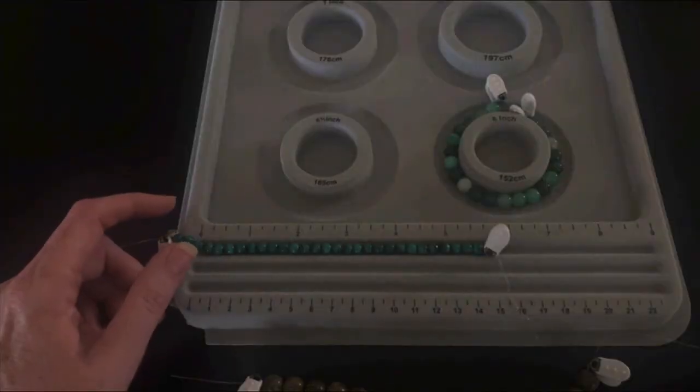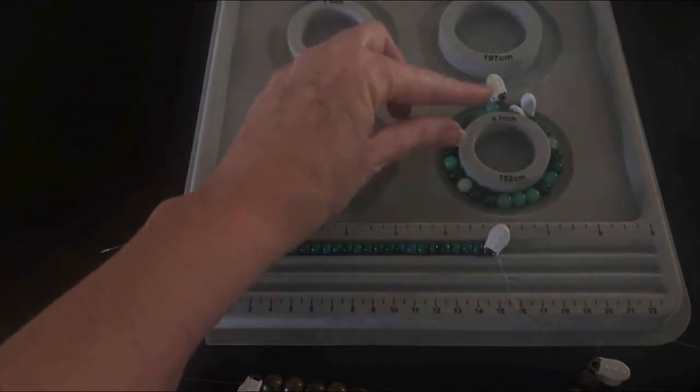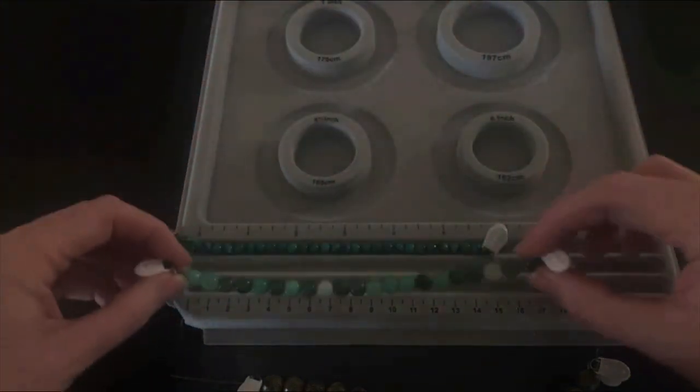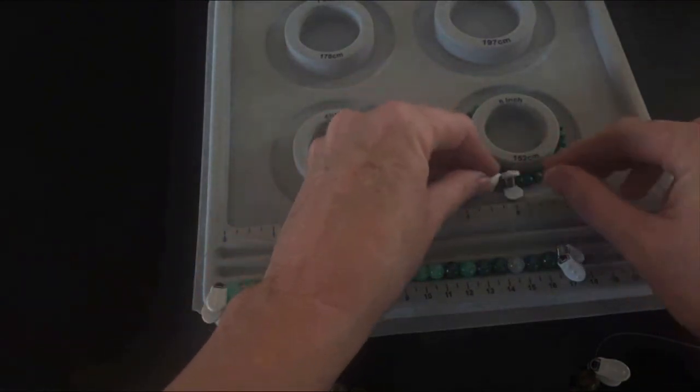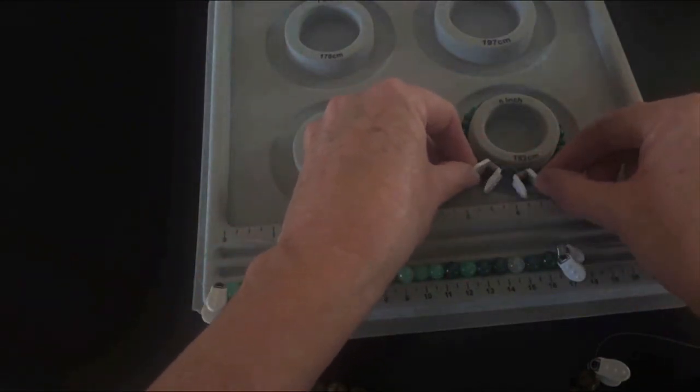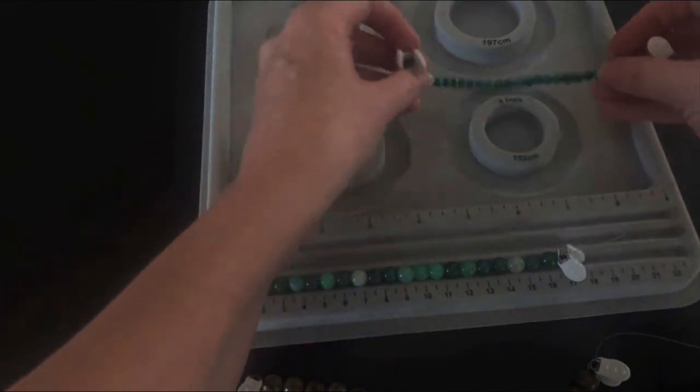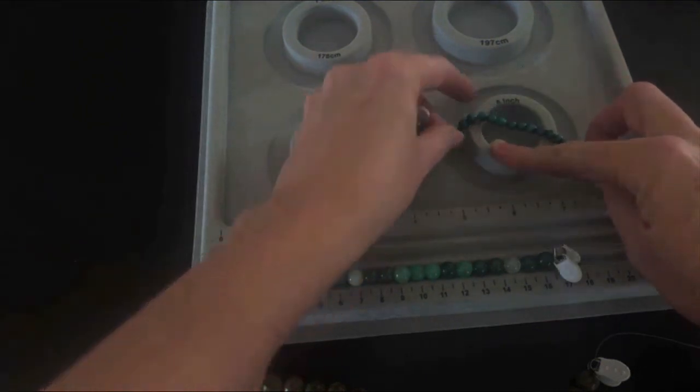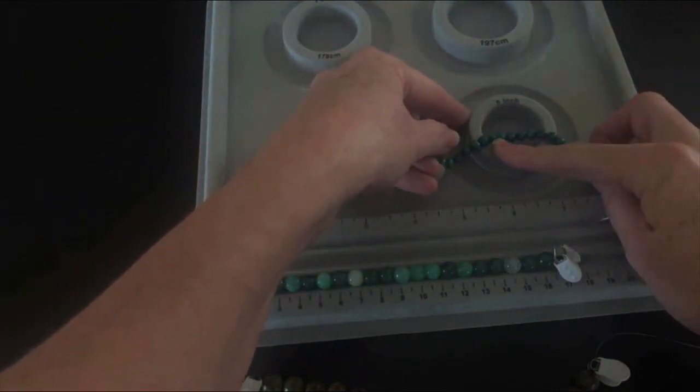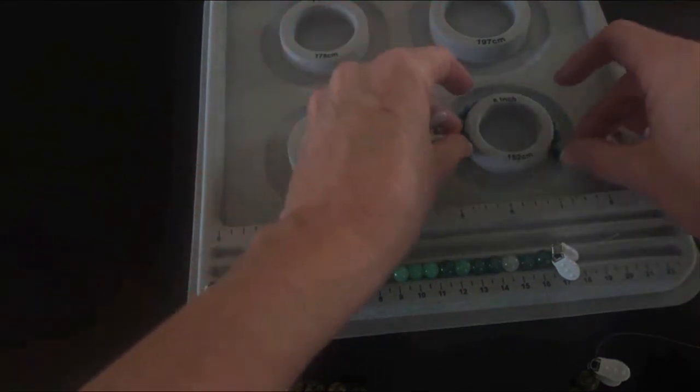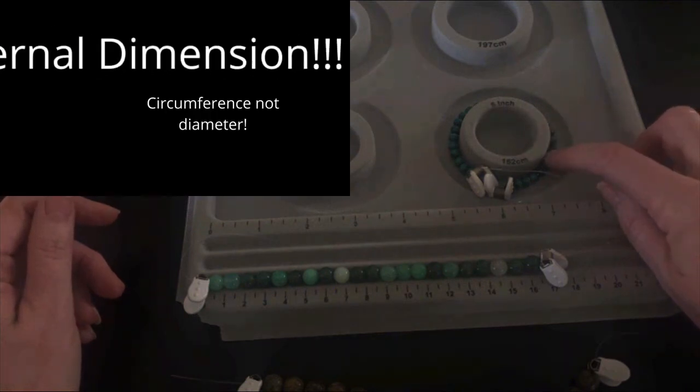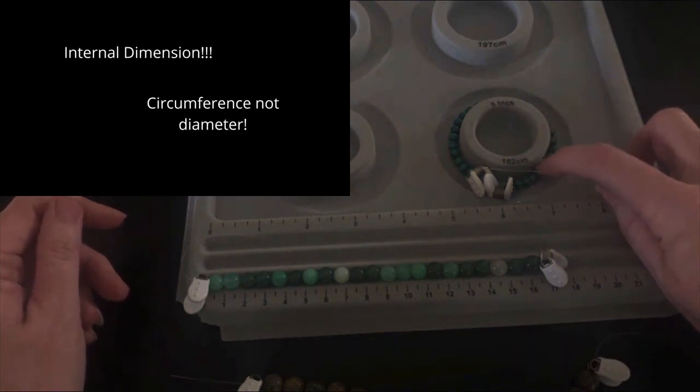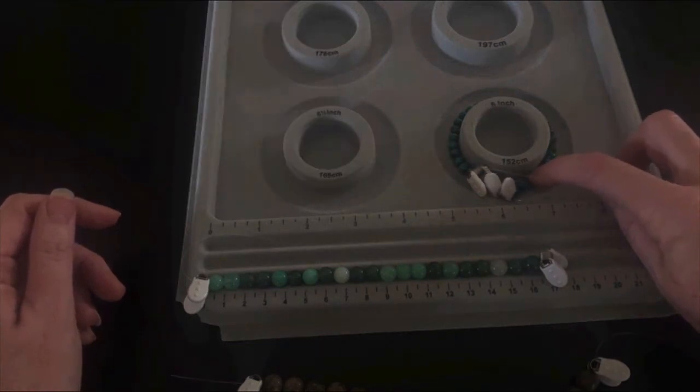Something special to notice about the beading board: how did a six and a half not fit all the way? How come there's that gap on a six inch board? It's because these beading boards add that one quarter to a half inch around. So when you're making six inches on a beading board like this, what you're really making is a bracelet with an inside diameter that will fit a six inch wrist with some give and some play.